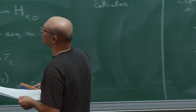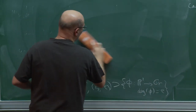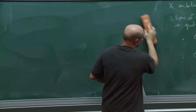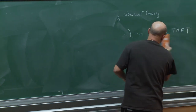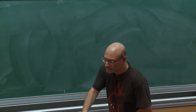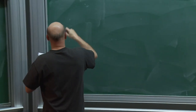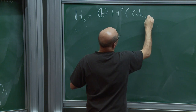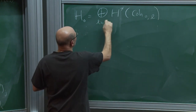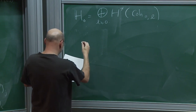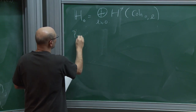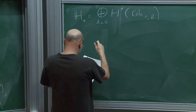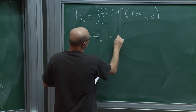Now let me describe the subalgebra corresponding to zero-dimensional sheaves — what in quantum group language you'd call the Cartan subalgebra. Denote by H_0 the direct sum of the cohomology of Coh_{0,L}. This is the easy part and can be totally explicitly determined.